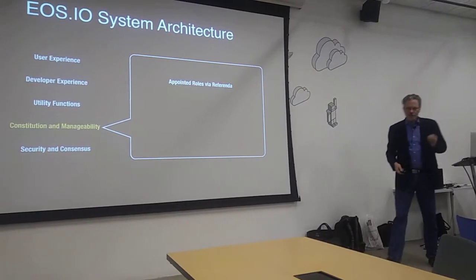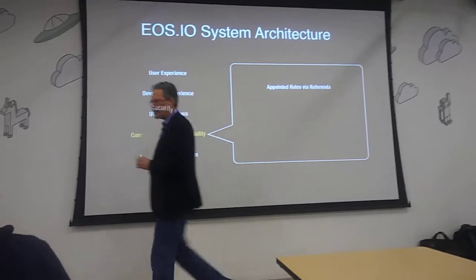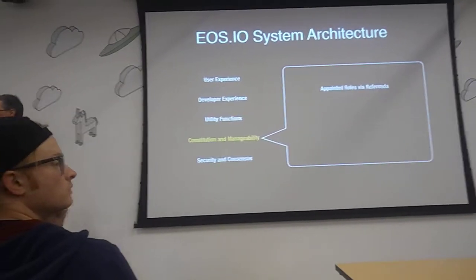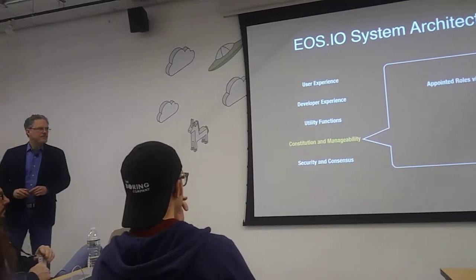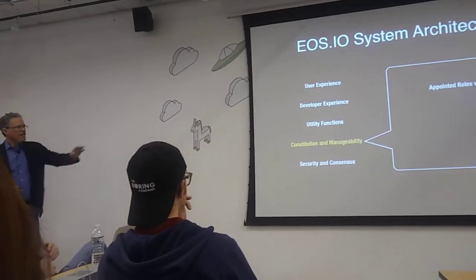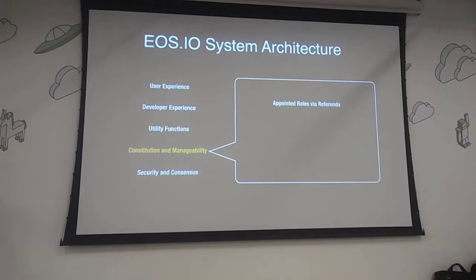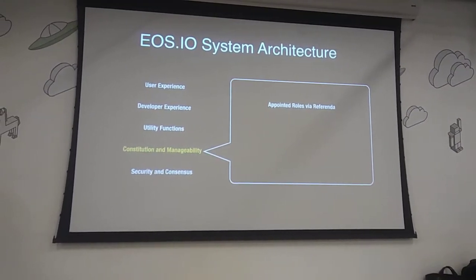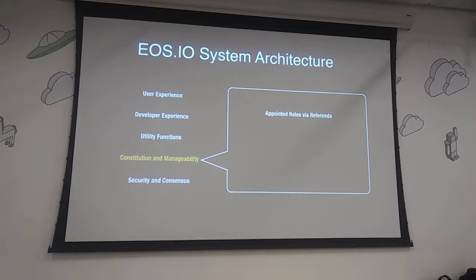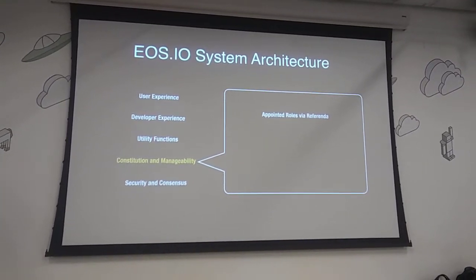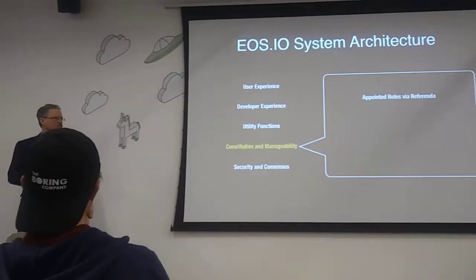I mentioned the Swiss village analogy. This constitution and manageability layer is that — this is the crucial differentiator, in my opinion. We appoint roles not by people fighting law jungle-style, not being appointed by the king, but through a democratic process — a collective decision-making process, a referendum — who will be a block producer, who will take on certain roles.